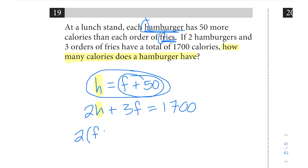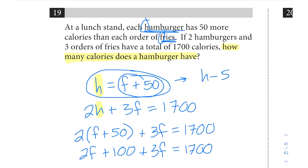The way it's already set up, we can do 2 times (f + 50) plus 3f equals 1700, and then distribute, combine like terms, and solve. If you wanted to switch things around prior to this, that's okay. If you wanted to isolate f instead and plug in by getting f equals h minus 50, that's okay and that's actually a great way to do it because then you have everything left in terms of h.